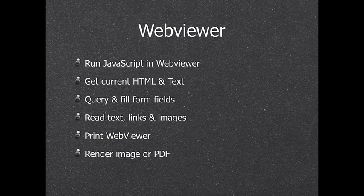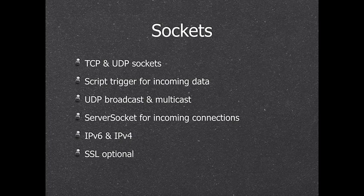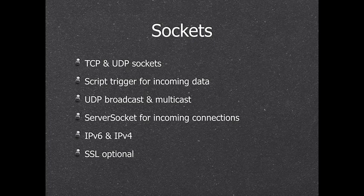We can print the web viewer, and on Mac we can print to PDF or get an image of the web viewer on Mac and Windows. We have TCP/IP sockets and UDP sockets — if you have a device you can talk to over the network, you can do that with the plugin, with script triggers for incoming data. For UDP we can send broadcast messages to all computers in the network — you can implement a chat feature or pass commands to a specific computer, which can check if the message is for it and act accordingly.